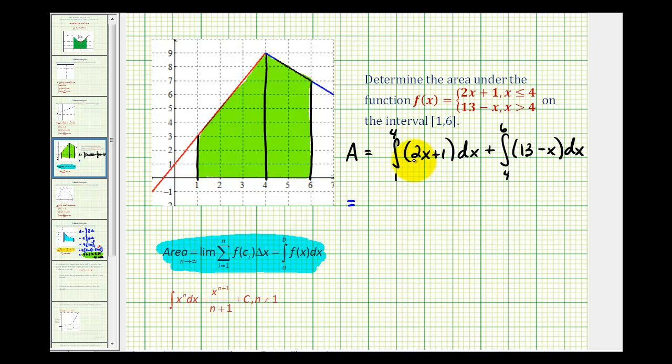So the antiderivative of 2x would be two times x squared divided by two, or x squared, plus x. We'll evaluate this at four and one. Plus, the antiderivative of 13 minus x would be 13x minus x squared divided by two, and we'll evaluate this at six and four.